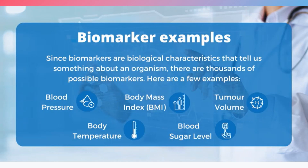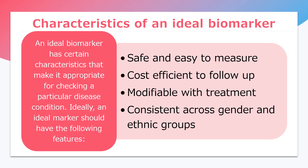Simple biomarkers are biological characteristic features like blood pressure, body mass index, tumor volume, blood sugar level, and body temperature. But there are also specific biomarkers which need to be tested. For a biomolecule or measurement to be called an ideal biomarker, it should be safe and easy to measure, cost-efficient for follow-up tests, modifiable with treatment, and consistent across genders and ethnic groups — not changing from person to person or across geographical regions.